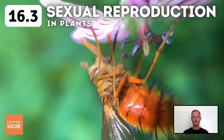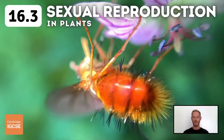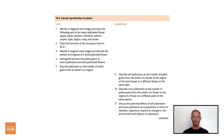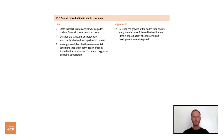Hello and welcome to another complete Cambridge IGCSE Biology lesson, where you'll learn absolutely everything you need to know on topic 16.3, Sexual Reproduction in Plants. As always, we'll be following the Cambridge syllabus exactly, and we'll cover absolutely everything you need to know for your final exam.